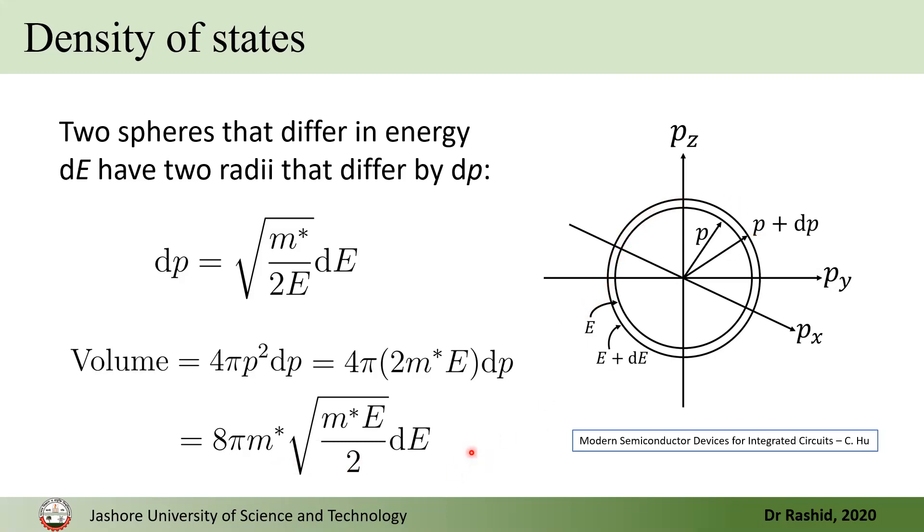Now, we have seen that for one state, the volume occupied by one state is H cube by 2 L cube. So, if we divide this volume with that volume, then we will have the number of states in this volume. That is, we divide this volume by the volume occupied by each state.